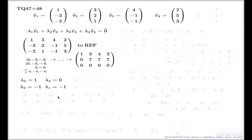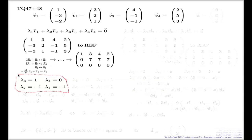Let's do a double-check using these values in the original matrix: (-1)·1 + (-1)·3 + 1·4 + 0·2 = 0; (-1)·(-3) + (-1)·2 + 1·(-1) + 0·5 = 0; (-1)·(-2) + (-1)·1 + 1·(-1) + 0·3 = 0. It all works. Having these four coefficients — not all zero — that vanish the linear combination is enough evidence to conclude the system is linearly dependent.